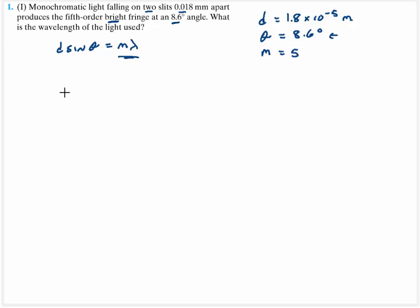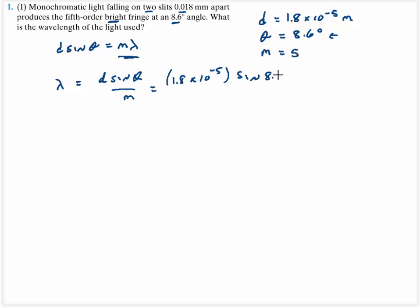So again, integer multiples of wavelength. That tells me my wavelength is going to be d sine theta divided by m. So 1.8 times 10 to the negative fifth, multiplied by the sine of 8.6 degrees, divide that by 5. And I'm going to get my wavelength to be equal to about 5.4 times 10 to the negative seventh meters.